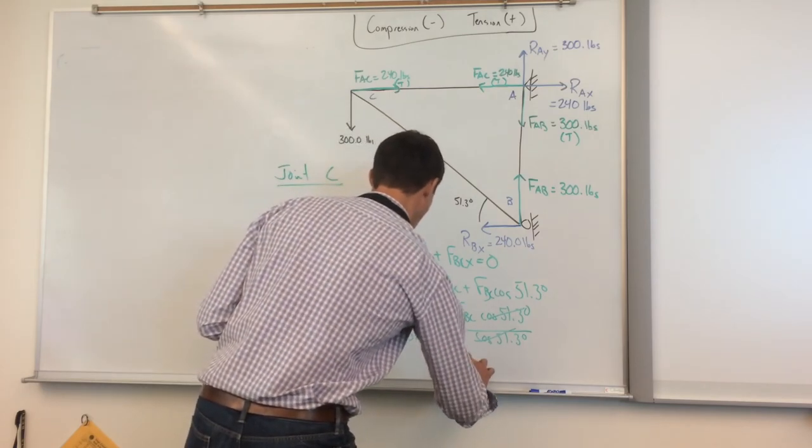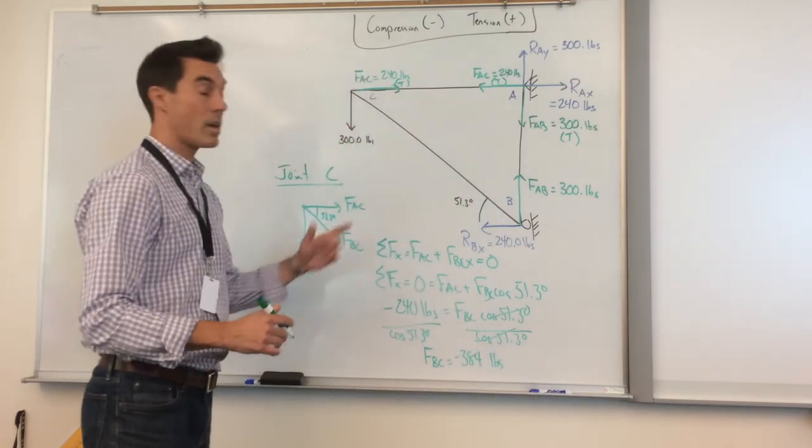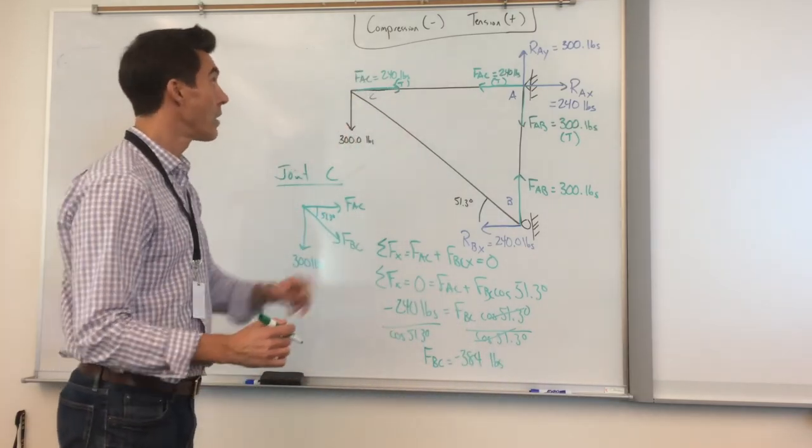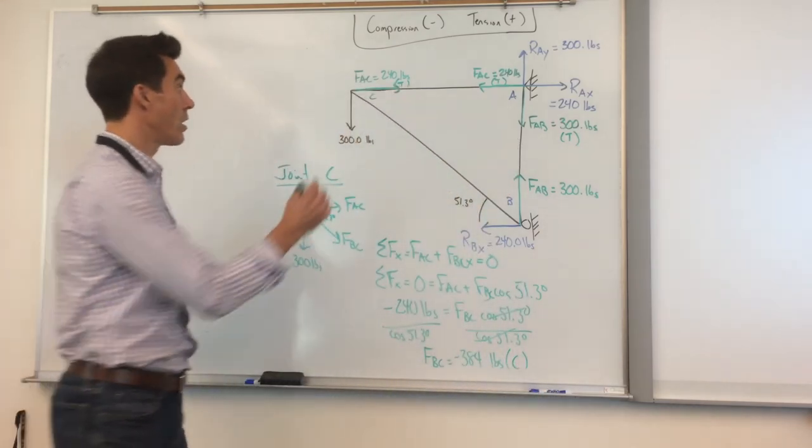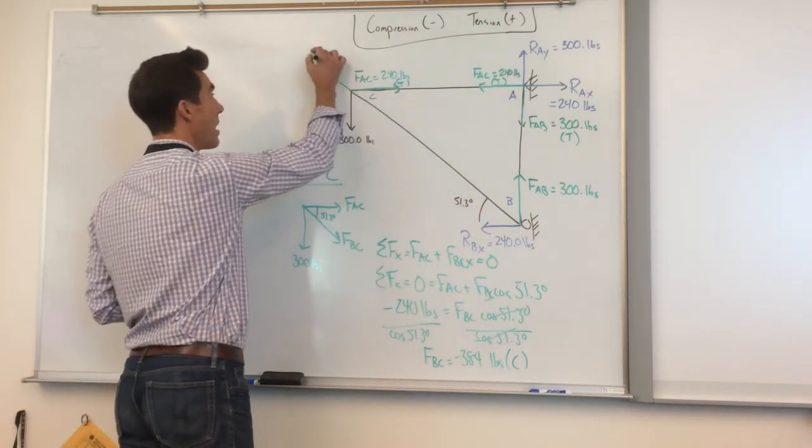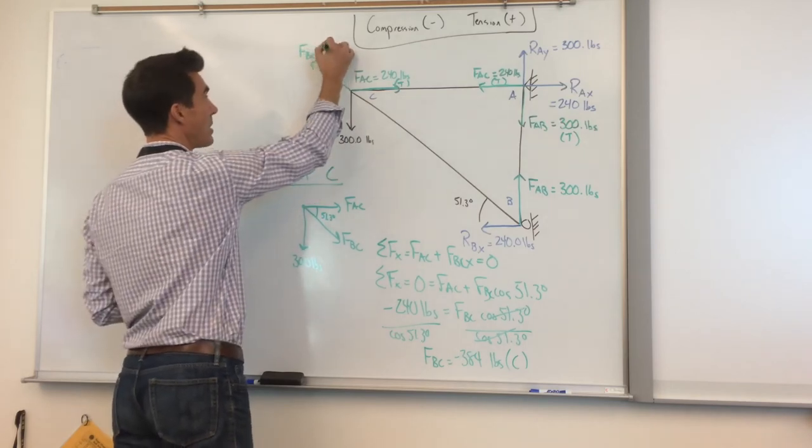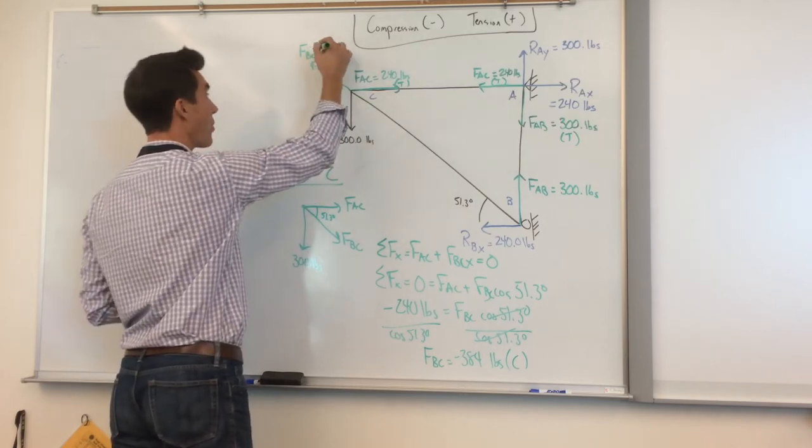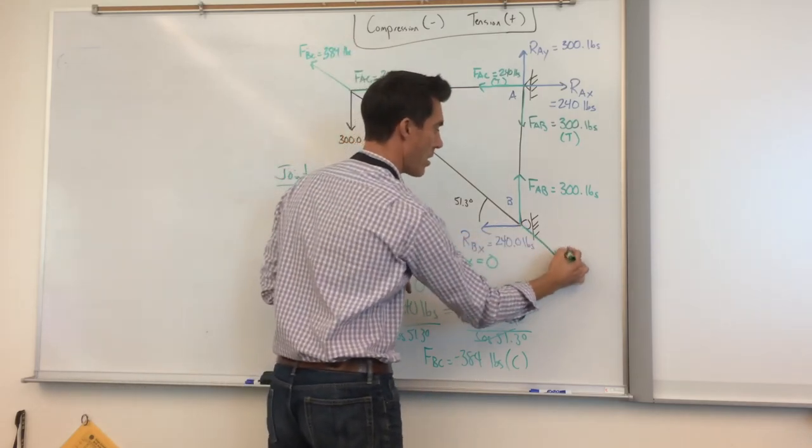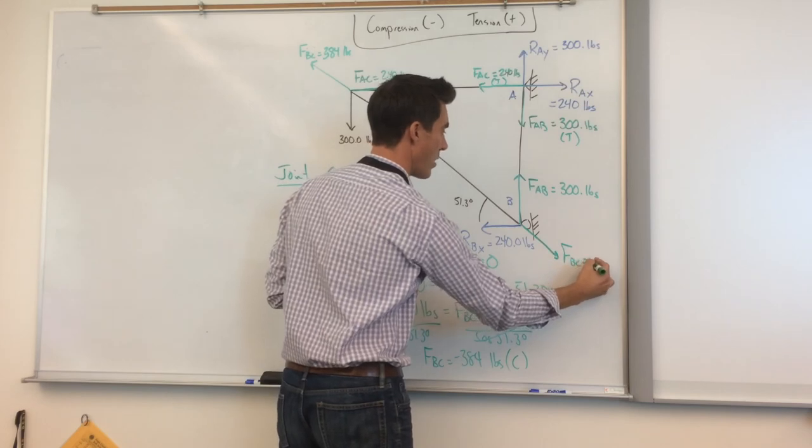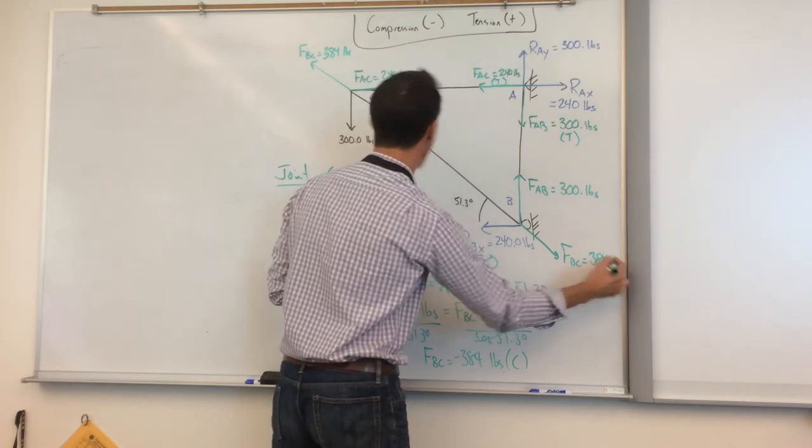FBC is negative 384 pounds. Because it is a negative, we know that negative means compression. And therefore, those forces will be directed outward in our final free body diagram. FBC is 384 pounds. And then we'll also put it over here. So FBC is 384 pounds. And that is again under compression.